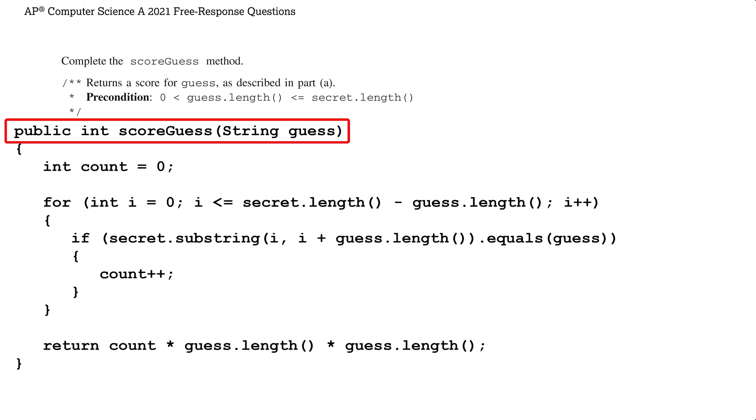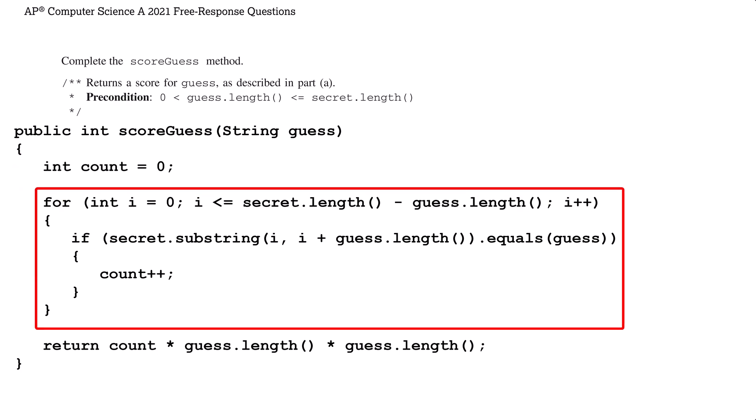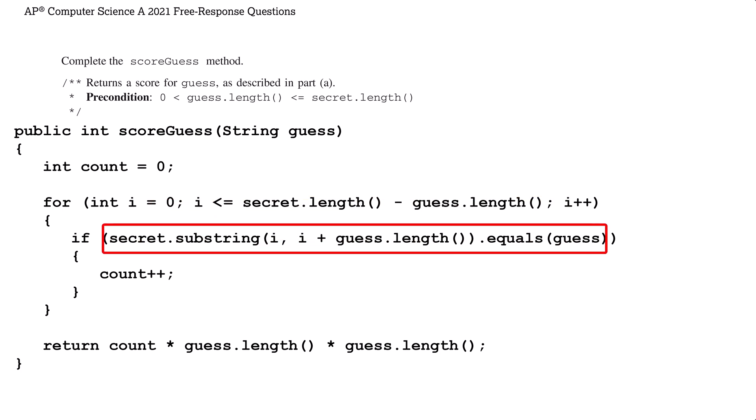We have the header that was provided to us. Next, we have a count variable to keep track of the number of occurrences of the guess in the secret instance variable. The variable is initialized to zero. We use a for loop to iterate through all possible substrings of secret that have the same length as the guess. To make sure we don't go out of bounds of the secret string, we use the secret.length minus guess.length expression as the upper limit of the loop. We pull out each substring and check if it is equal to guess using the string equals method. If it is, we increment the count variable.